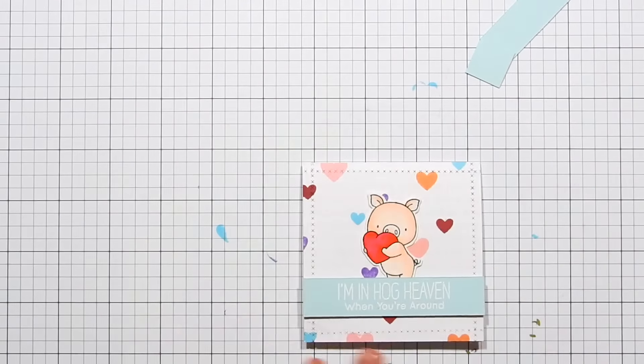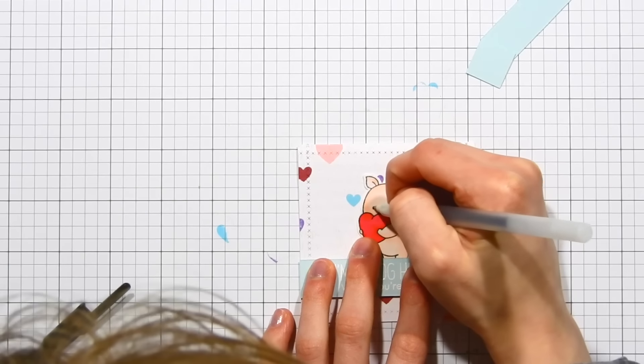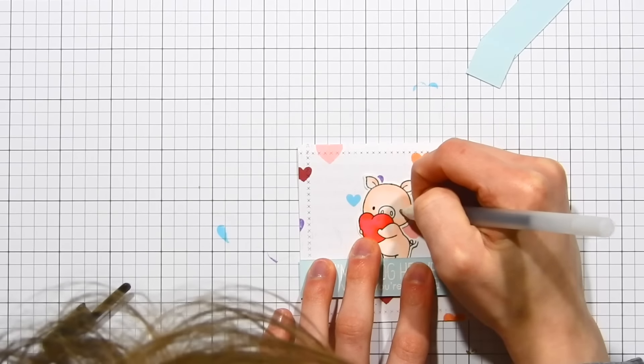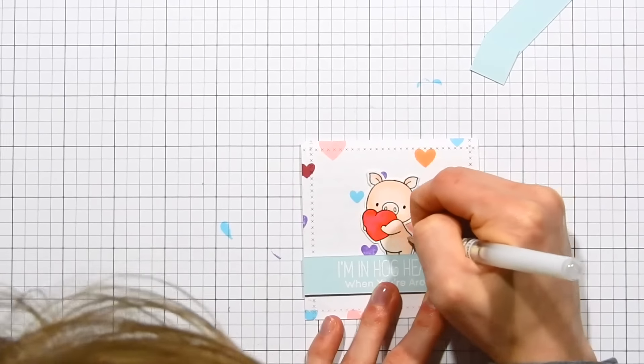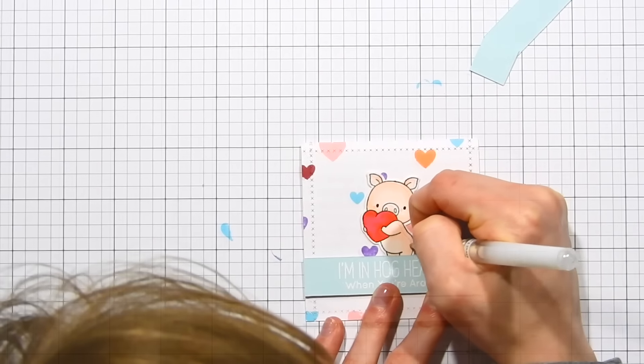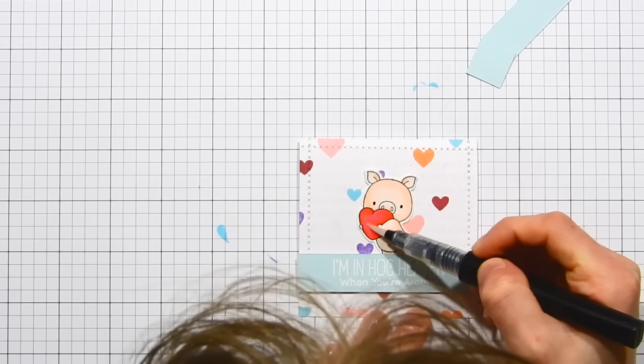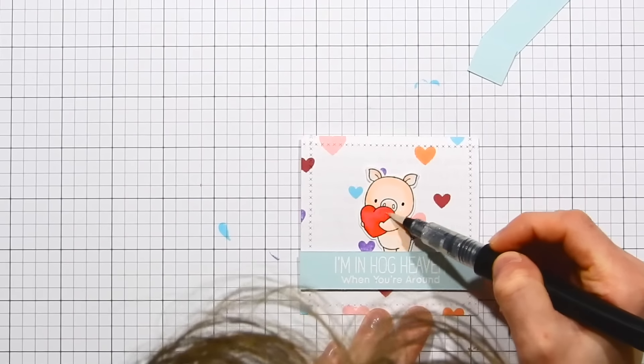For some detail on the pig, I went over his eyes with the black Sakura Glaze pen. I also used the Signal White gel pen to add some white dot detail to his cheeks and also to his body. I just think it really adds a little bit of decorative element to the pig. Finally, I added some sparkle and shine using the Spectrum Noir shimmer pen—this just adds a nice bit of shimmer and shine to the heart.